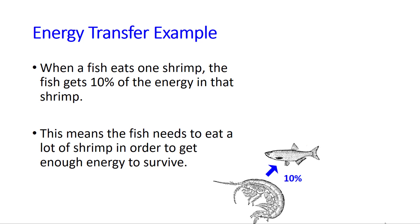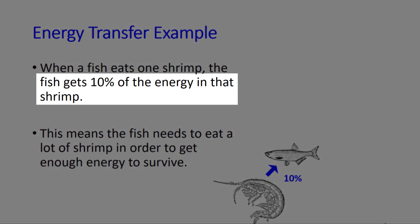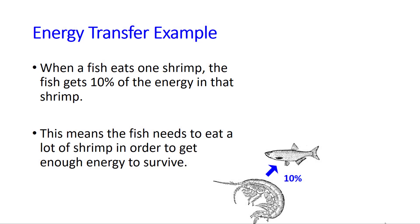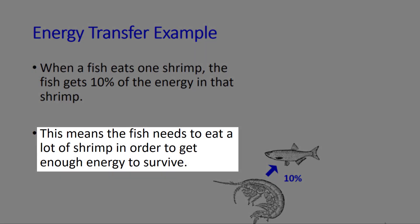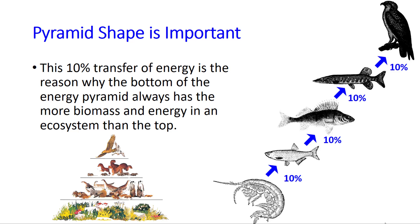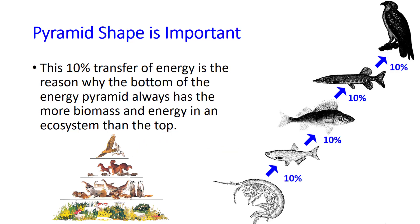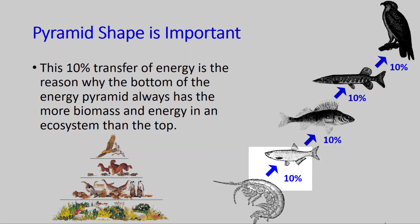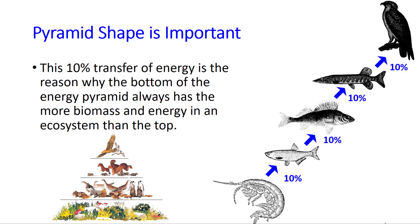Every time something is eaten, you only get 10% of the energy from it. That means you need to eat a lot more of something because you're only getting 10% of the energy. And if you look far up the energy pyramid, there's going to be a lot less organisms, or a lot less biomass at the very top, because 10% of the energy is transferred and 90% is lost as heat.